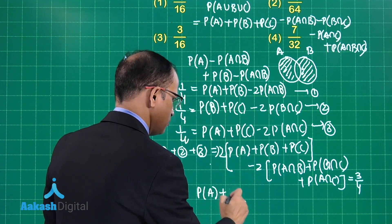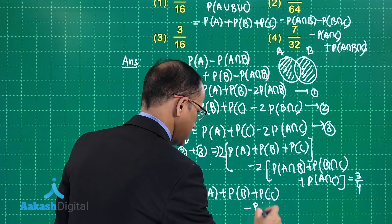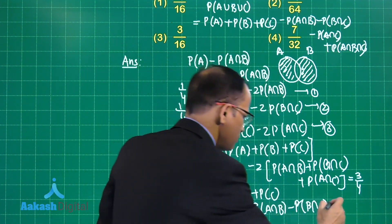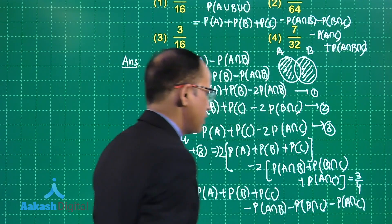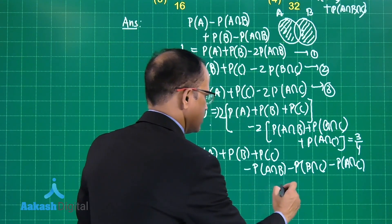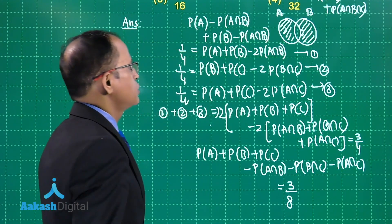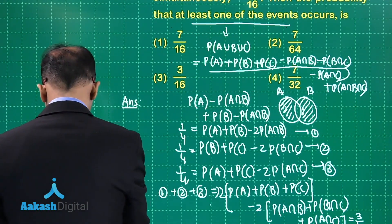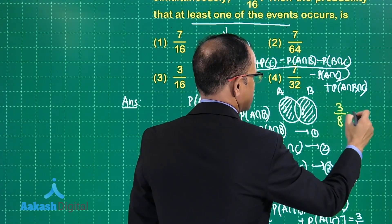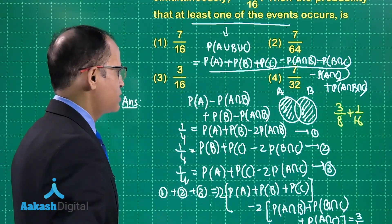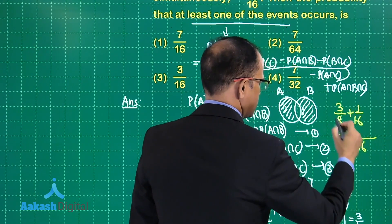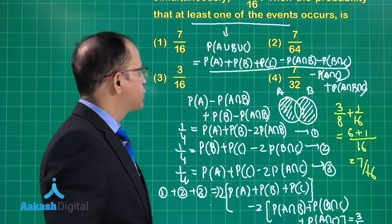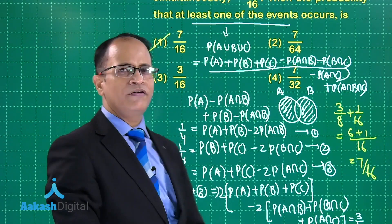Substituting into the inclusion-exclusion formula: P(A∪B∪C) = 3/8 + P(A∩B∩C) = 3/8 + 1/16. Taking 16 as LCM: 6/16 + 1/16 = 7/16. So the probability of at least one of the events occurring is 7 upon 16, which is the correct answer.